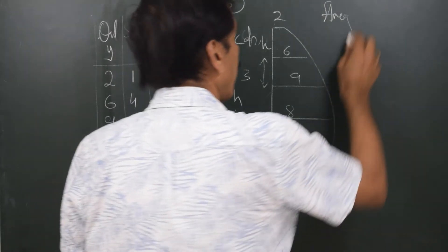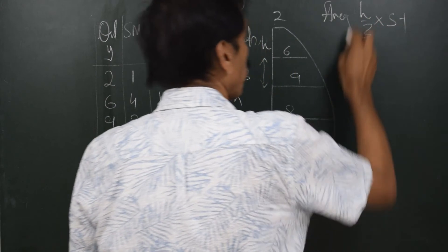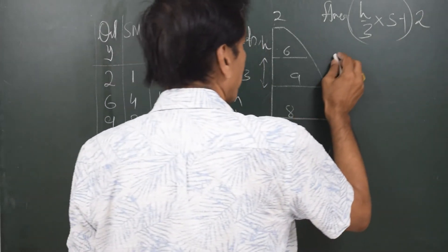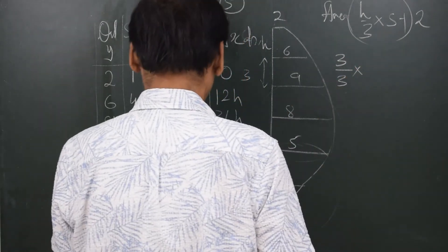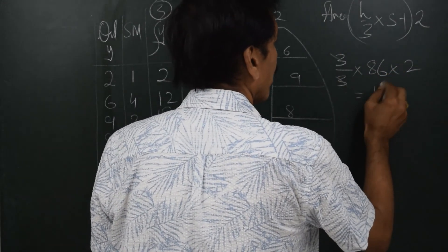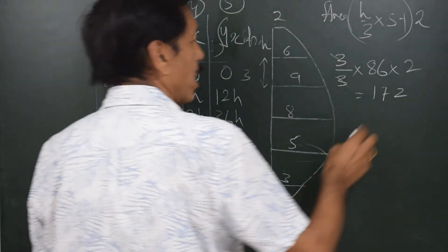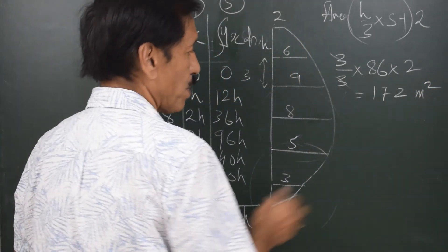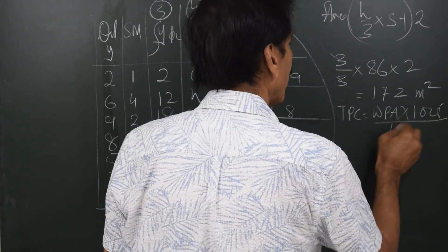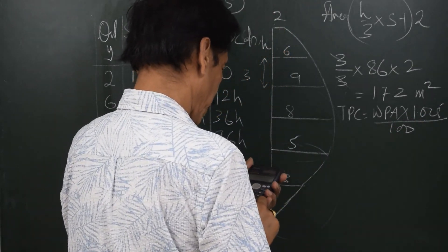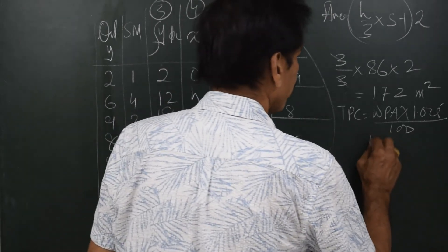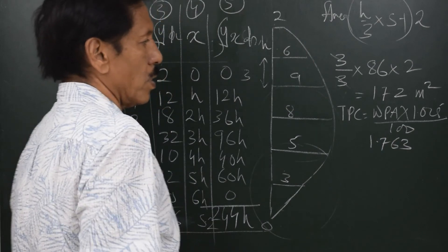The area of the half waterplane is given by h/3 times Sum 1. For the complete waterplane area we multiply by 2. With h = 3 meters: Area = (3/3) × 86 × 2 = 172 square meters. If someone asks for TPC, that is waterplane area × 1.025 divided by 100, which is 172 × 1.025 / 100 = 1.763.